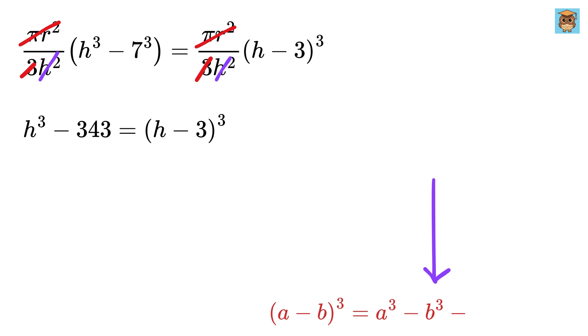Using A minus B whole cube formula, which is A cube minus B cube minus 3AB times A minus B, if we use A as H and B as 3, we will expand H minus 3 whole cube to get H cube minus 9H square plus 27H minus 27.